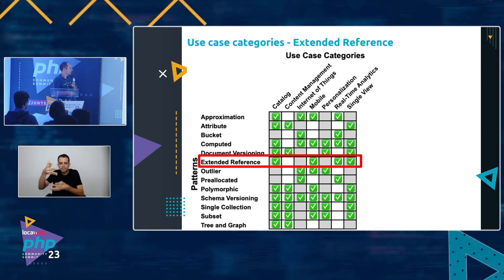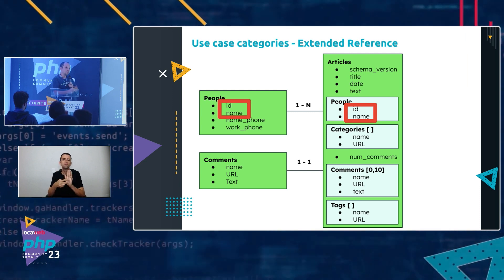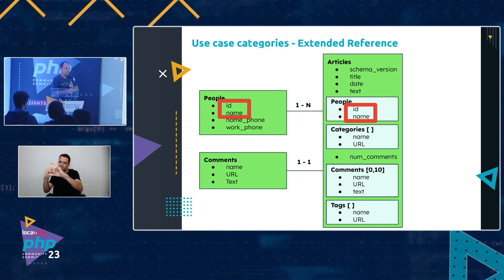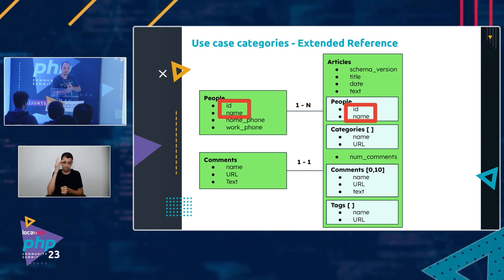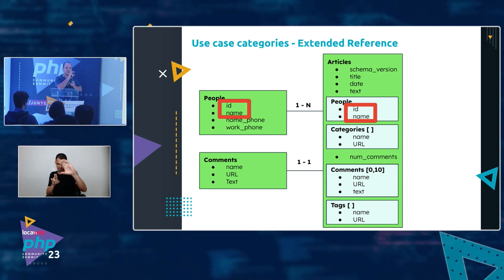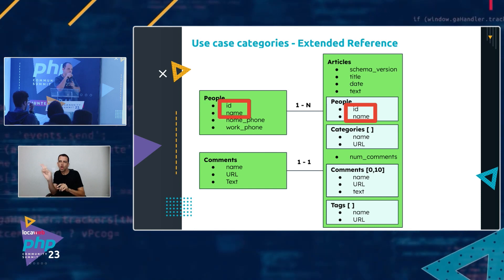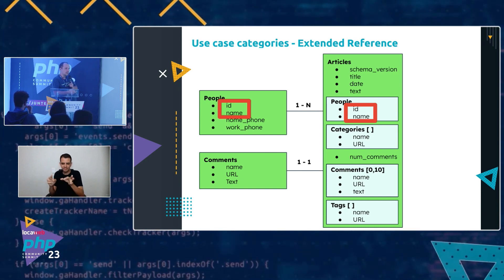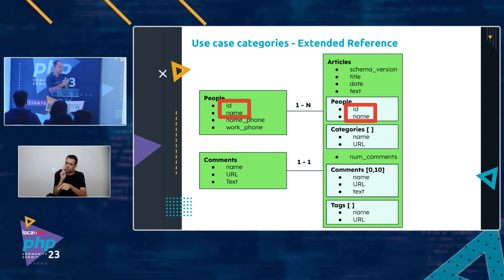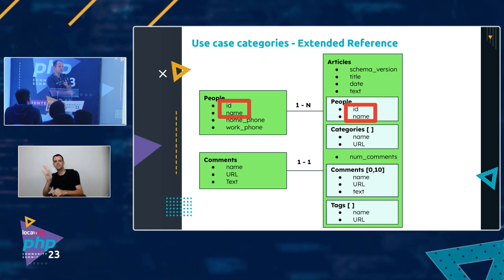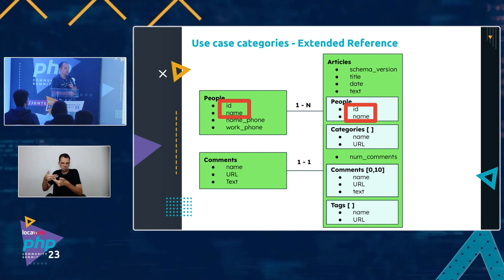The Extended Reference pattern is when you take part of an object you use and embed it together with the main document. For example, the person who made a comment on an article: the document already carries that person's comment, their ID for hyperlinking, and their name. If you click on the profile link, it extends to all remaining information of that person. That's an Extended Reference design pattern.